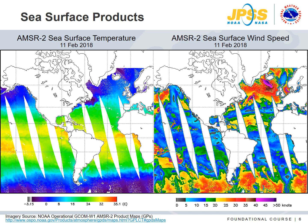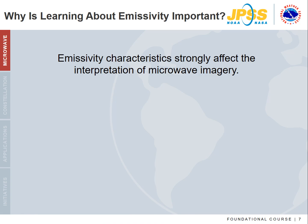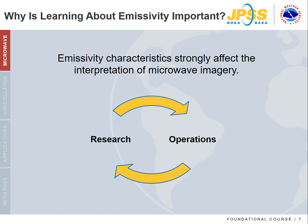Variability in ocean emissivity allows for the derivation of sea surface temperature and sea surface wind speed, both of which can be used directly in operations. Emissivity characteristics strongly affect the interpretation of microwave imagery. As always, there are strengths and limitations. Understanding the components that go into a product and providing feedback enhances its quality. If something doesn't look right, ask questions, compare with other observations, and consider relaying discrepancies back to the researcher.